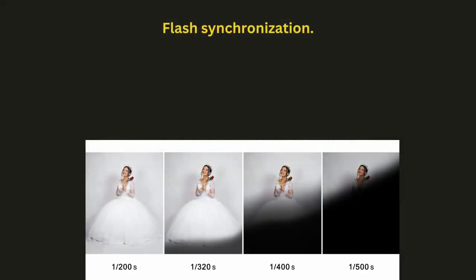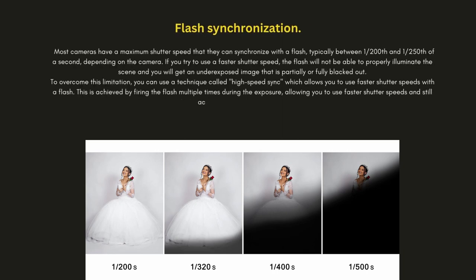Another important aspect of shutter speed is flash synchronization. Most cameras have a maximum shutter speed they can synchronize with a flash, typically between 1/200th and 1/250th of a second. If you try to use a faster shutter speed, the flash will not properly illuminate the scene and you'll get an underexposed or partially blacked-out image. To overcome this limitation, you can use high-speed sync, which fires the flash multiple times during the exposure to allow faster shutter speeds while still achieving correct exposure. More on flash settings will be discussed in upcoming videos.